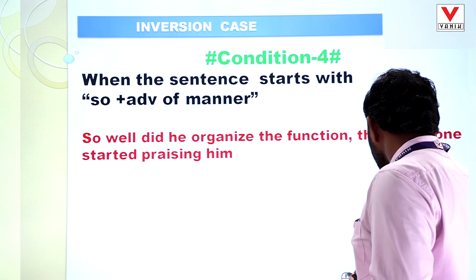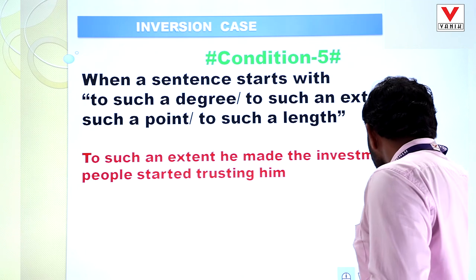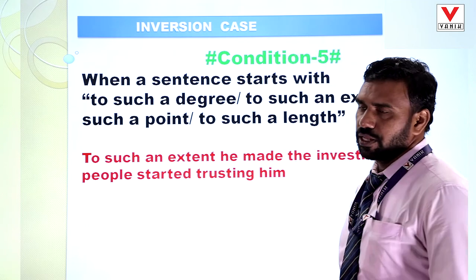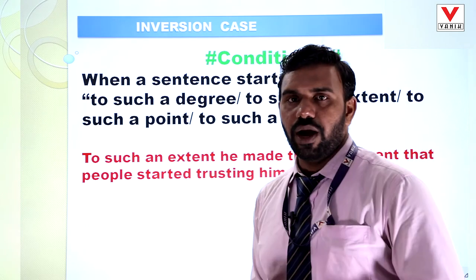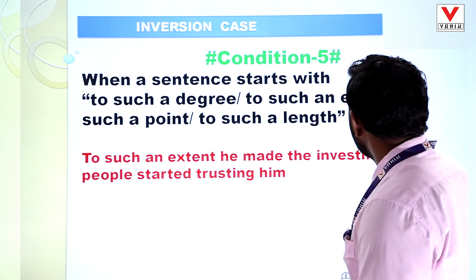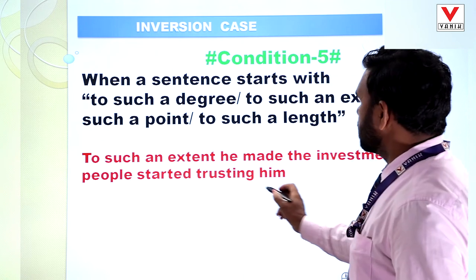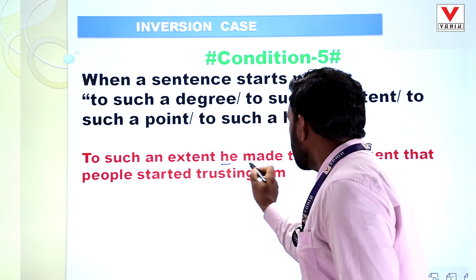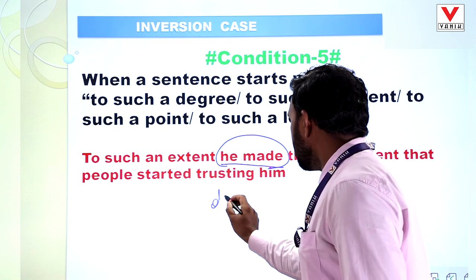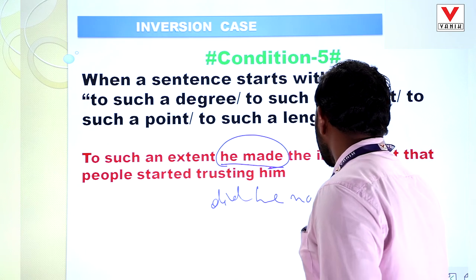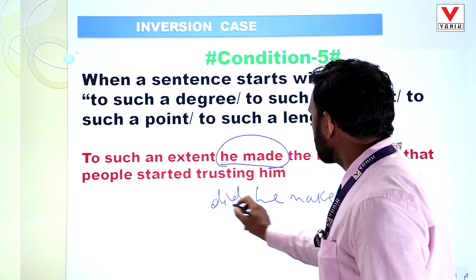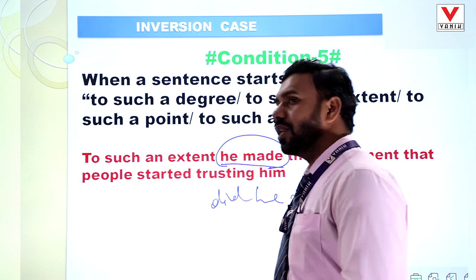Inversion case also takes place with phrases like 'to such a degree,' 'to such an extent,' 'to such a point,' and 'to such a length.' If a sentence starts with these phrases, we have to use inversion. For example: 'to such an extent did he make the investment that people started trusting him' — not 'he made the investment.' To make it inversion, say 'to such an extent did he make the investment that people started trusting him.'